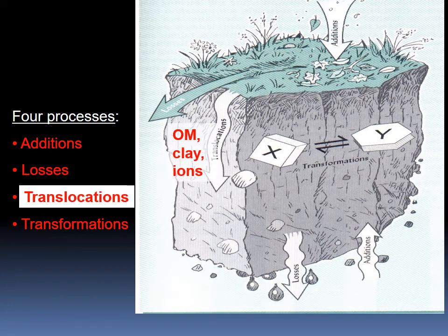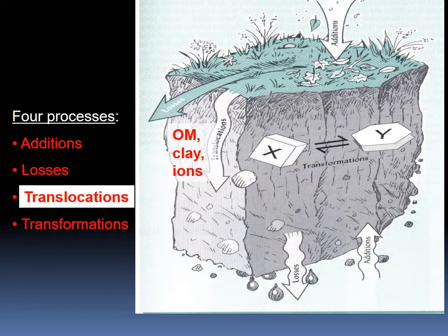Translocation is basically the movement within the soil. Some materials can be moved from top to bottom, like what we saw during the formation of the E horizon and the B horizon — materials like organic matter, clay, or iron are lost from the topsoil and accumulated into the B horizon. Translocation can also happen horizontally, moving things within a layer from point X to point Y.